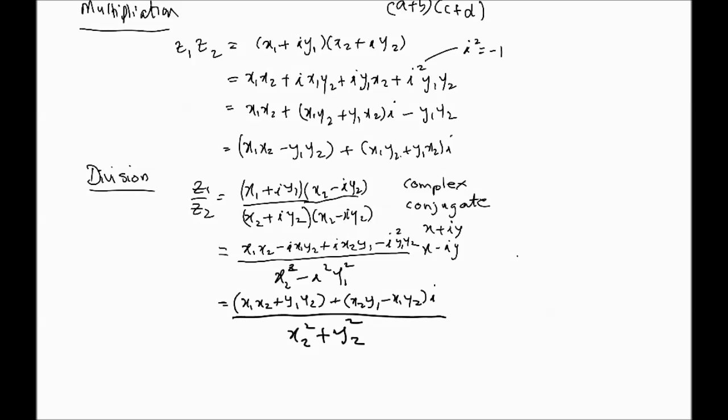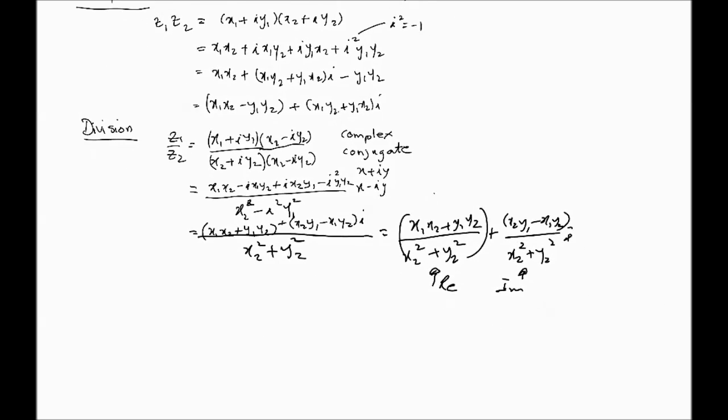It's all real. There is no, it's not complex anymore. It's real, in fact. So, you could actually now separate this and rewrite this as, z1 over z2 can be written as, x1, x2 plus y1, y2 over, you can take out its real part, that's the real part, plus, you have, x2, y1 minus x1, y2 over x2 squared plus y2 squared into i. So, now you have, this is your real part, and this is your imaginary part. So, that kind of manipulation can be done using the complex conjugate. So, that's basically division.